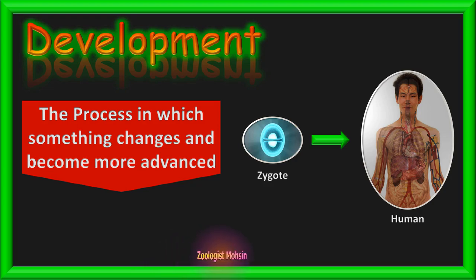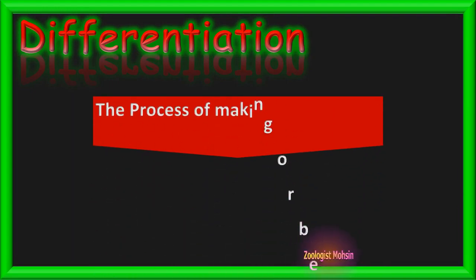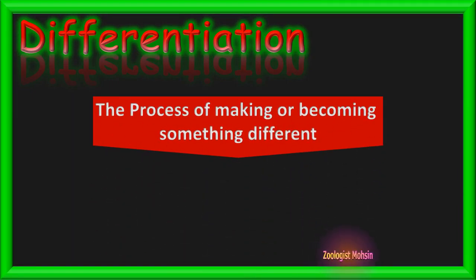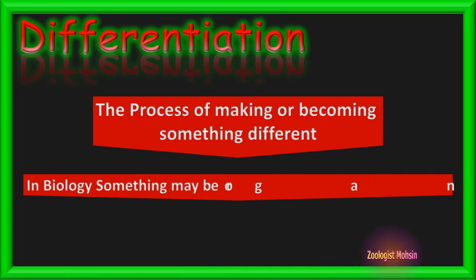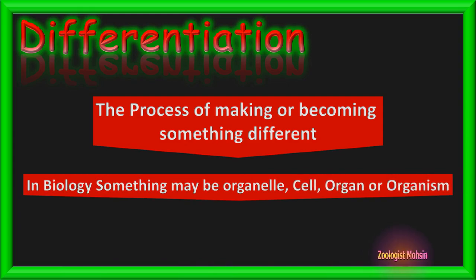That's why when we talk about a zygote becoming a human, we use the term development in a broader sense. The next term is differentiation — the process of making or becoming something different. The word 'different' is the key here. More specifically in biology, differentiation is connected with cells only.